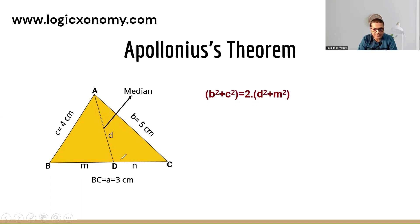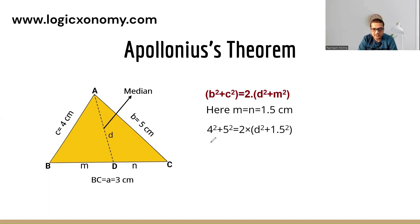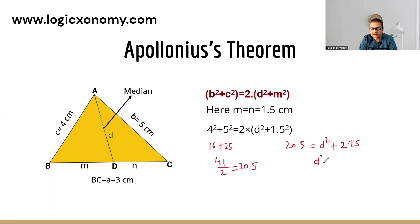Here d is the length of the median. Using the previous example where c = 4, b = 5, BC = 3 cm, then m = n = 1.5 each. According to the Apollonius formula: 4² + 5² = 2(d² + 1.5²). So 16 + 25 = 41 = 2(d² + 2.25). Therefore d² = 18.25, and d = √18.25 cm. This is the length of the median AD.